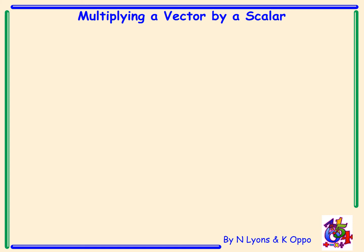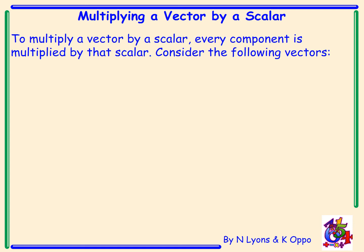Multiplying a vector by a scalar. To multiply a vector by a scalar, every component is multiplied by that scalar. Again, we'll look at these three vectors a, b and c.